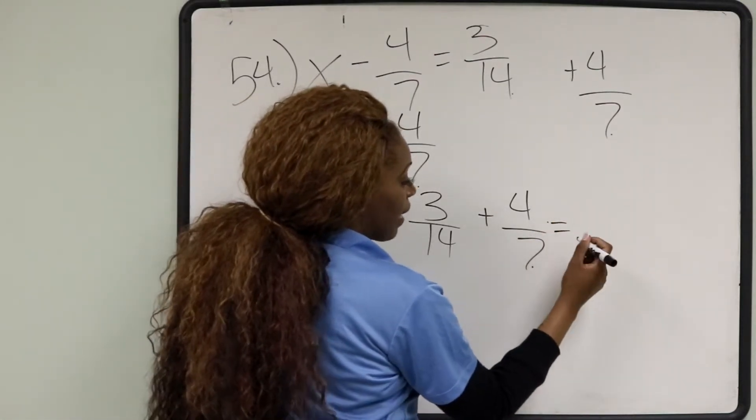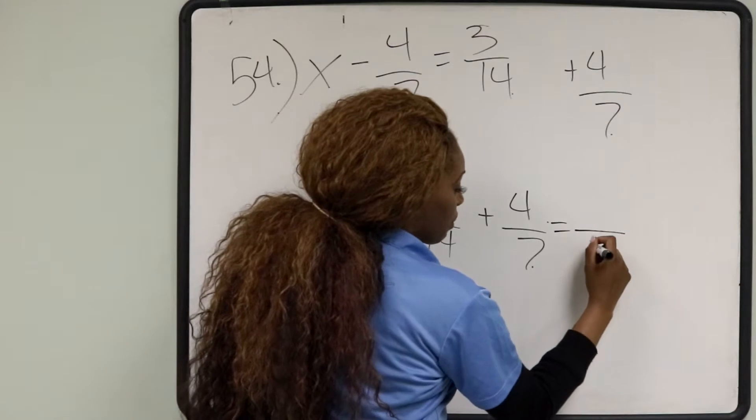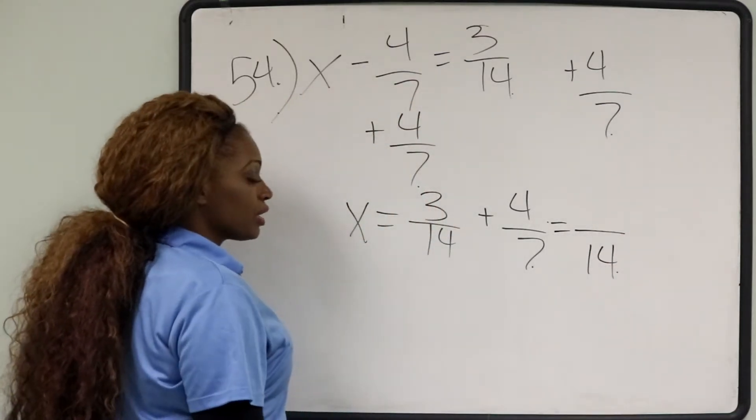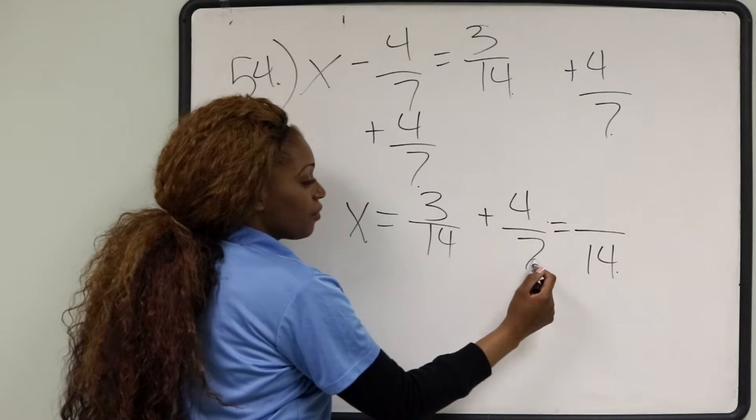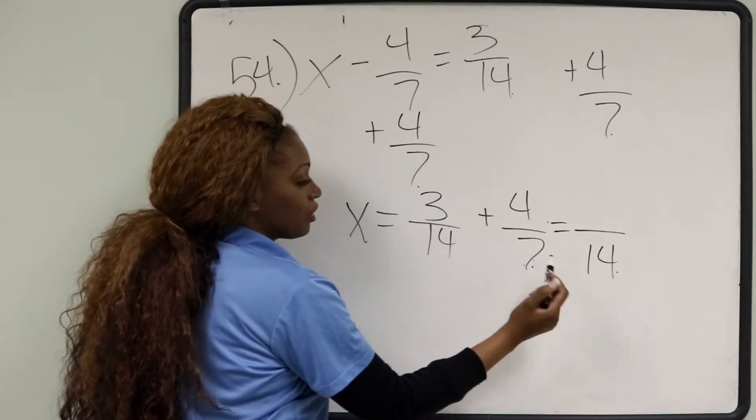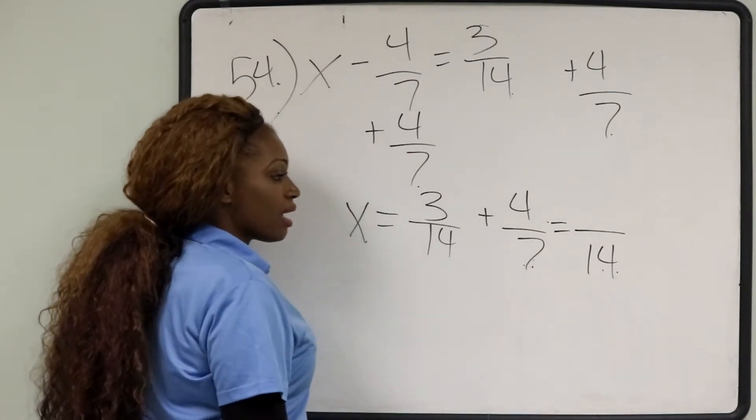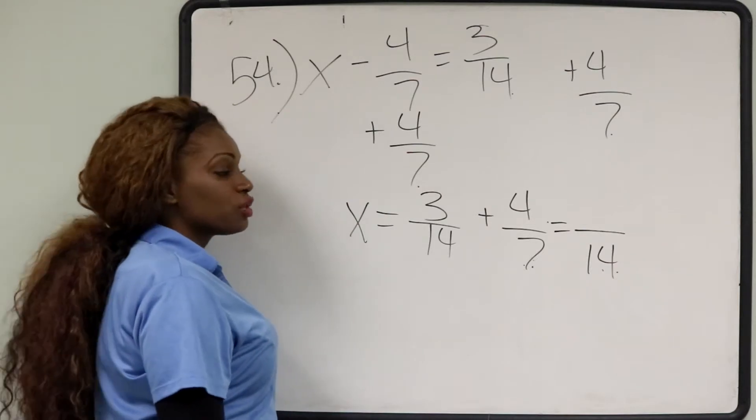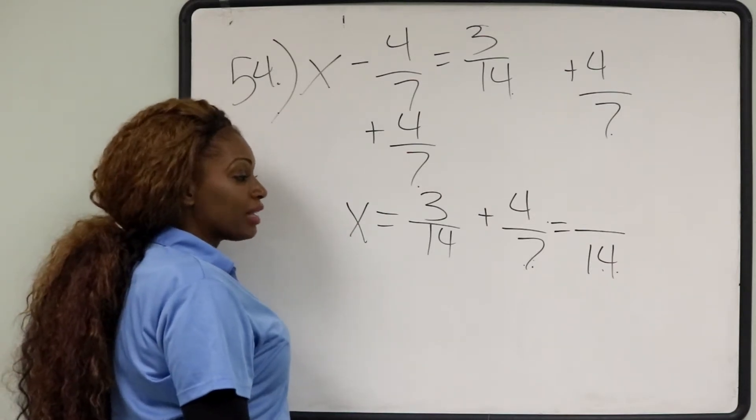and I'm going to put 14 in the denominator. Because we're trying to move from 7 in the denominator to 14 in the denominator. In order to do this, we can multiply by 2.